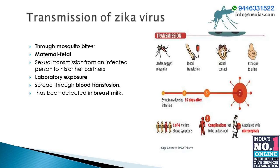Regarding transmission of Zika virus: the main transmission is through mosquito bites. Zika virus is transmitted to people primarily through the bite of an infected Aedes species mosquito — Aedes aegypti and Aedes albopictus. These mosquitoes typically lay eggs in standing water, prefer to bite people, and become infected when they feed on a person already infected with the virus. Infected mosquitoes then spread the virus to other people through bites.